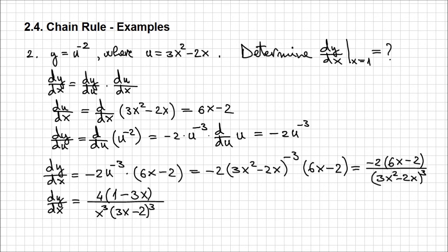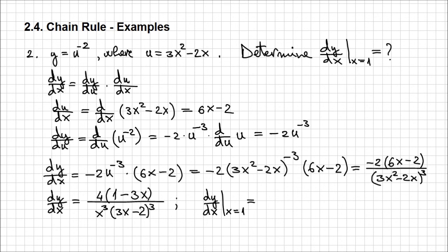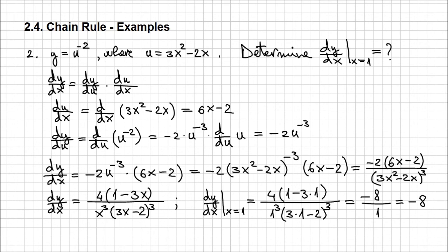Don't forget, this is not the last thing we need to determine — we need to evaluate the expression when x equals 1. So dy/dx at x equals 1 is: 4 times (1 minus 3 times 1) over 1 cubed times (3 times 1 minus 2) cubed. In the numerator, 1 minus 3 is minus 2, times 4 gives minus 8. In the denominator, 1 cubed is 1, and (3 minus 2) cubed is 1 cubed which is 1. So the denominator altogether is 1, and our result is minus 8.